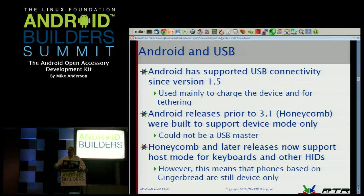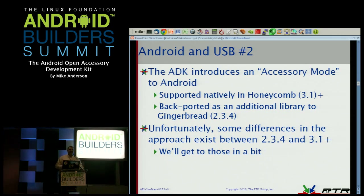We can't make the assumption that any arbitrary Android device is capable of being a USB host. This means we have to make assumptions about what we plug into the Android device to make sure that what gets plugged in is in fact a USB host. We operate in the mode that all Android devices are capable of, and that is USB target or USB device. Because it means the accessory kit has to run in an accessory mode as far as Android is concerned — that was supported natively in Honeycomb and later, with a backport done to Gingerbread.